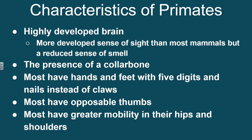Some of the characteristics of primates include a highly developed brain, a more developed sense of sight than most mammals, but a reduced sense of smell. Also the presence of a collarbone in many primates. Most have hands and feet with five digits and nails instead of claws, and most have opposable thumbs, which means that their thumb moves in the opposite direction of their fingers. Most also have greater mobility in their hips and shoulders.